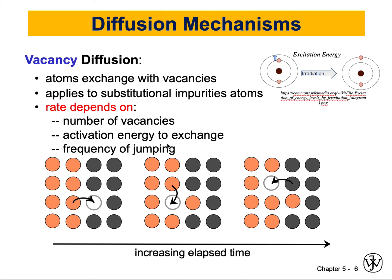Activation energy, by contrast, is what happens for the atom itself — the energy needed for an atom to move from one location to another. It depends on the elements the material is made of; some elements have high activation energy and some have low. The third parameter affecting vacancy diffusion is the frequency of jumping — how frequently atoms jump from one place to another. So, vacancy diffusion depends on: number of vacancies, activation energy to exchange, and frequency of jumping.